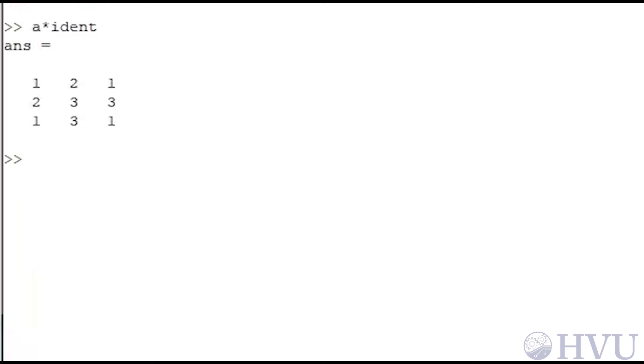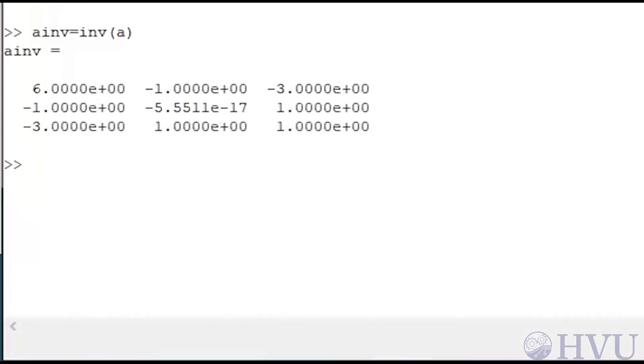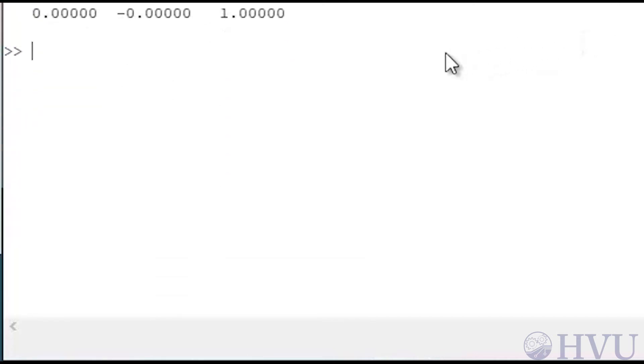Now I'll invert the A matrix using the INV command. So, AINV is equal to INV of A. To check to make sure that AINV is an actual inverse, I'll matrix multiply A times AINV. That looks like an identity matrix, but let's look a little closer.